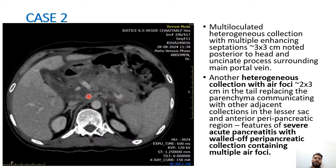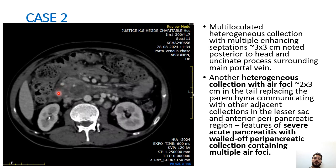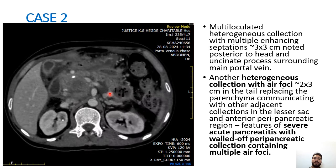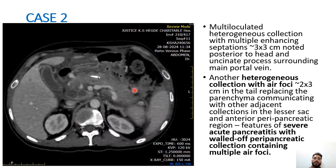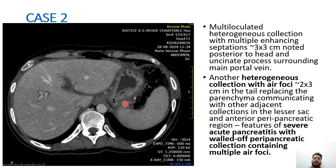A multiloculated heterogeneous collection with multiple septations is noted in the head region. Another heterogeneous collection with air foci is noted in the tail region, replacing the parenchyma and communicating with other adjacent collections in the anterior peripancreatic region. These are features of severe acute pancreatitis with walled-off peripancreatic collection containing multiple air foci, representing an infected collection.